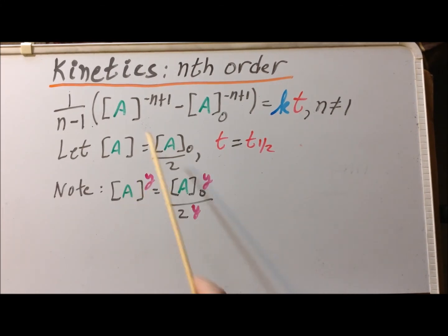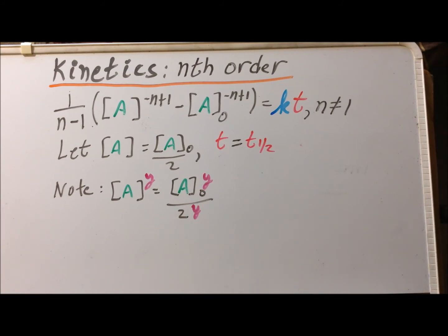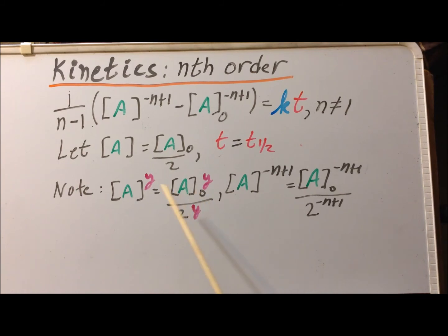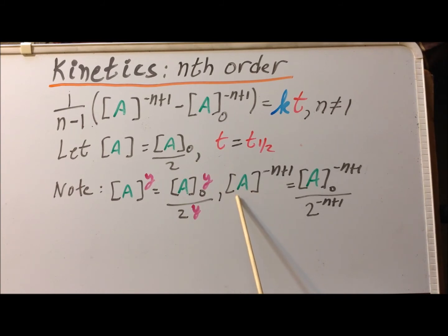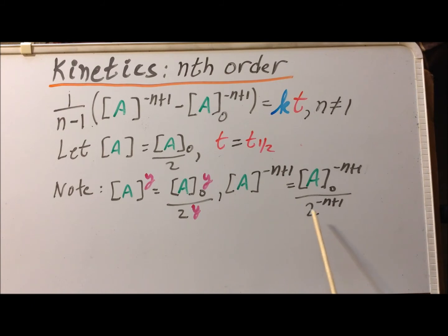Now note, if this is true by the properties of exponents, then the concentration of A to the y power is equal to the initial concentration of A to the y power divided by 2 to the y power. Since this expression is true for the exponent y, we'll just pick a specific exponent minus n plus 1, so now we have the concentration of A to the minus n plus 1 power is equal to the concentration of A initial to the minus n plus 1 power divided by 2 to the minus n plus 1 power.